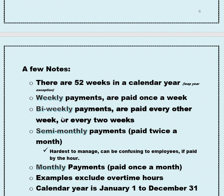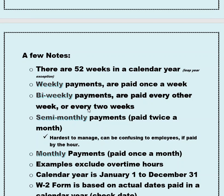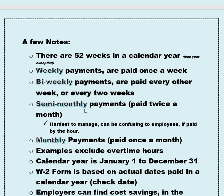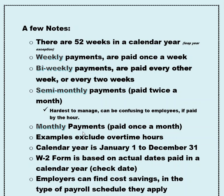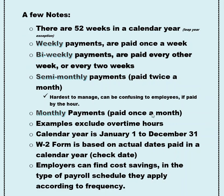Weekly payments are paid once a week. Bi-weekly payments are paid every two weeks. Semi-monthly is paid twice a month — in my opinion, this is the hardest to manage and can be confusing for hourly employees eligible for overtime, since one pay period could fall mid-week in a work week. Monthly payments are paid once a month. The downfall for monthly is that it's a bit harder to budget, but it is still an option your employer could use.